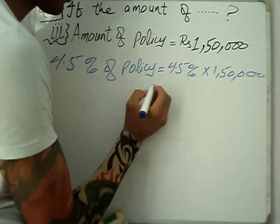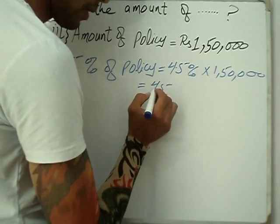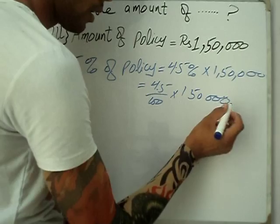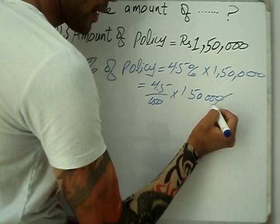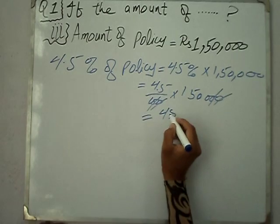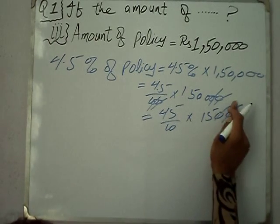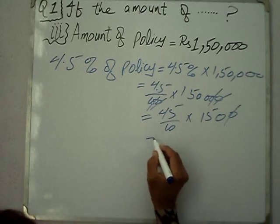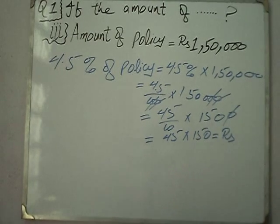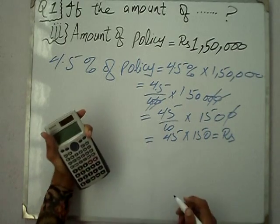4.5% of ₹1,50,000 means 4.5 divided by 100, multiplied by 1,50,000. The zeros cancel out. We get 45 multiplied by 150, which equals ₹6,750.